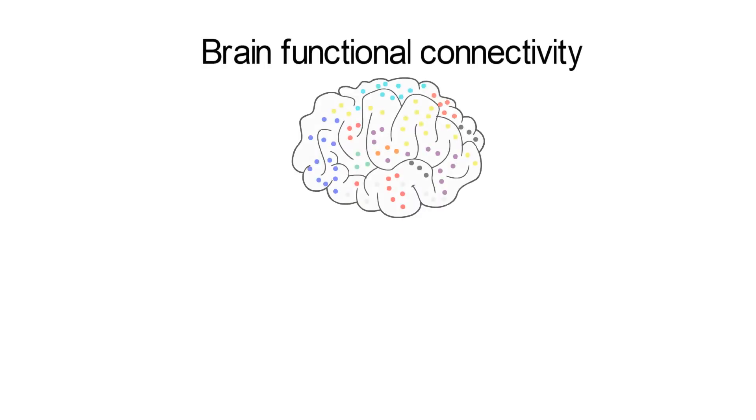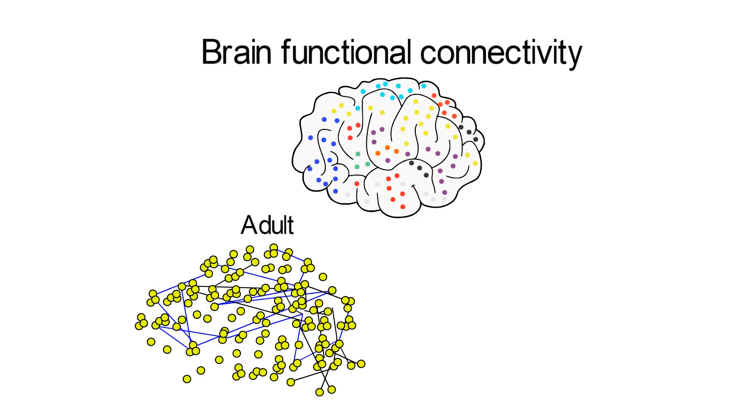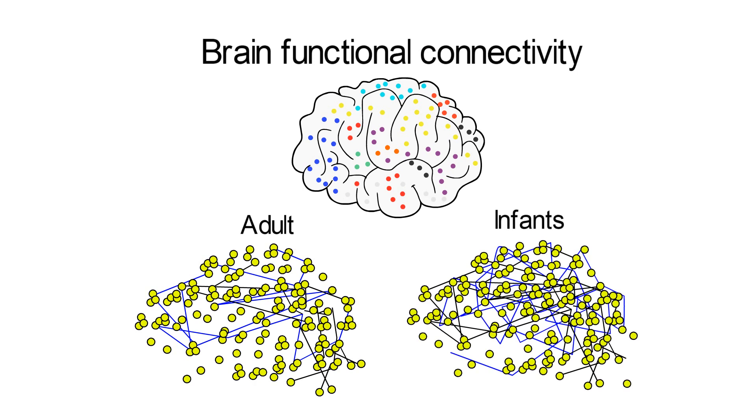By using graphical lasso independently across data from different groups, for example, adults versus infants, we can compare the differences between the connections.